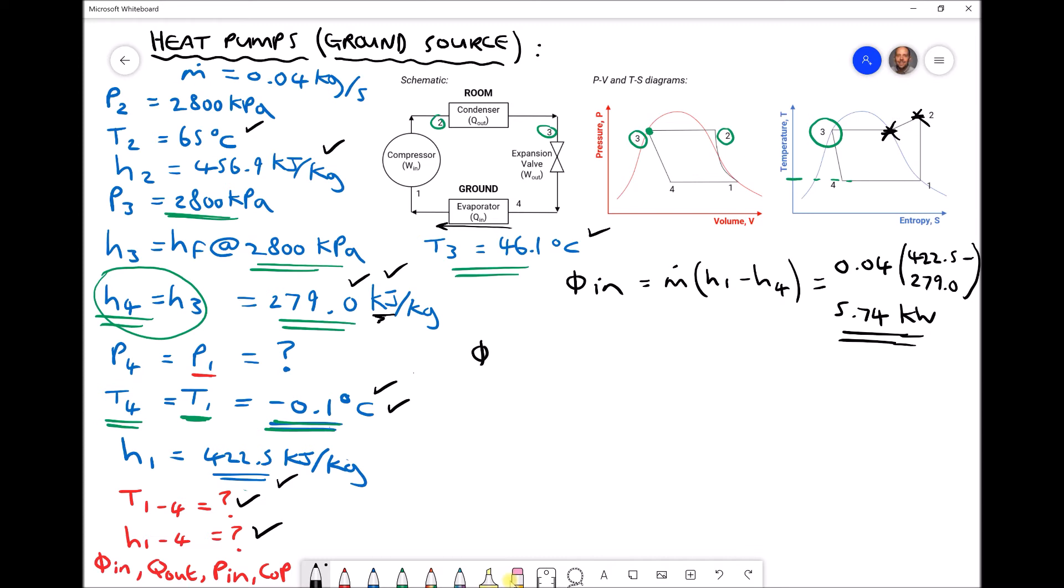Next then we have phi out. Now the energy leaving the refrigerant is the energy entering the room. We have the mass flow rate times the enthalpy exiting H3 minus the enthalpy entering H2. Our mass flow rate for our system remains constant. Our enthalpy H3 is the same as H4, 279.0, and our enthalpy H2 is our value for the superheated vapor, 456.9.